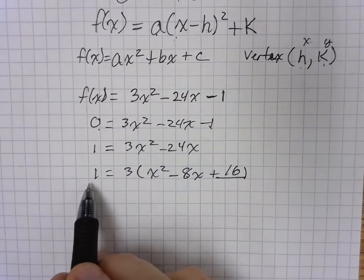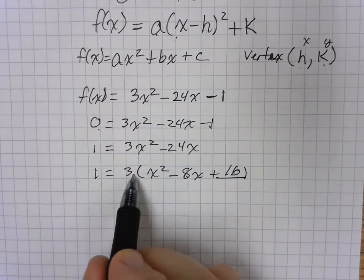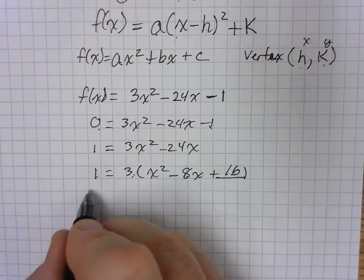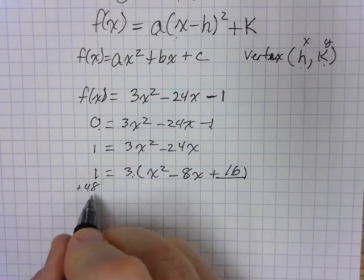But on the other side of my equation, we don't want to add 16 because there's a times 3 outside there. So 16 times 3 is going to give us 48. So we're actually going to add 48 to this side.